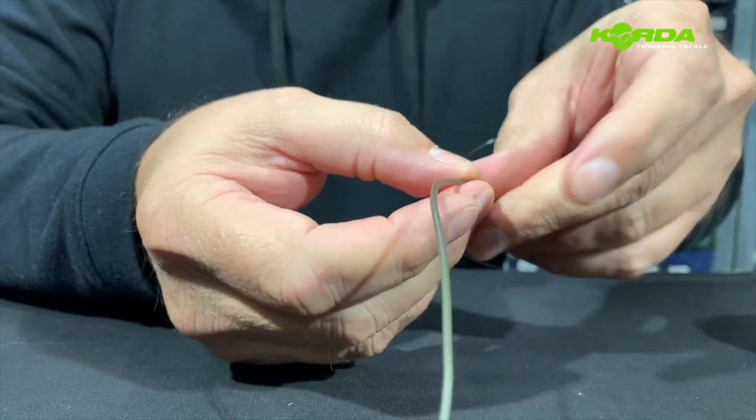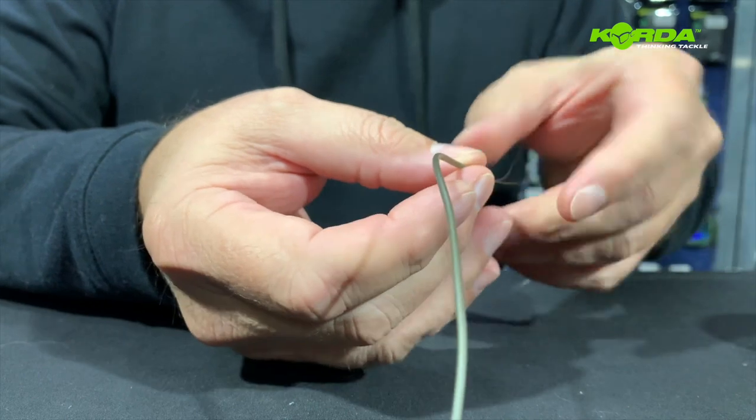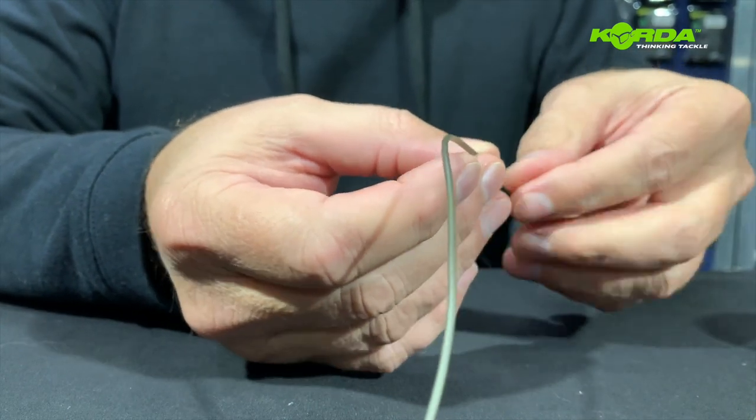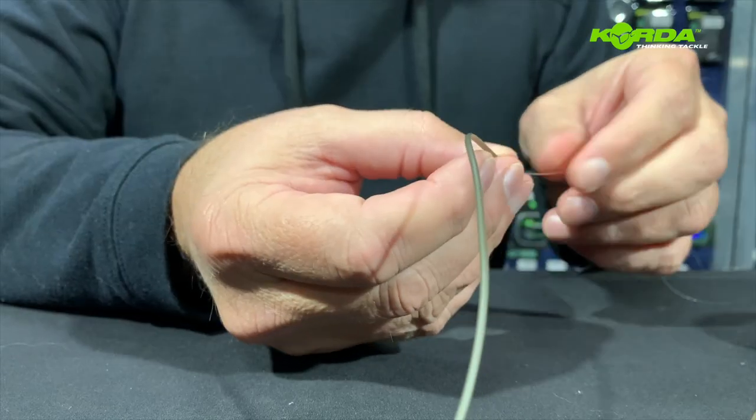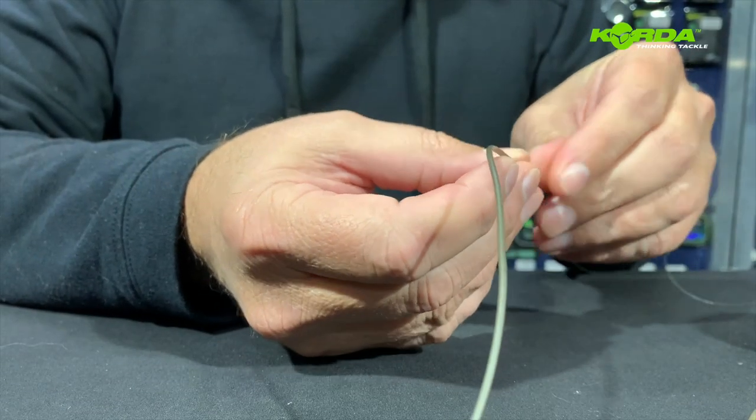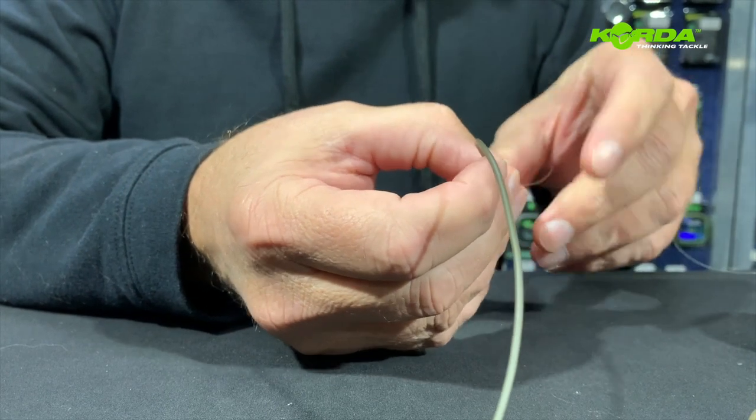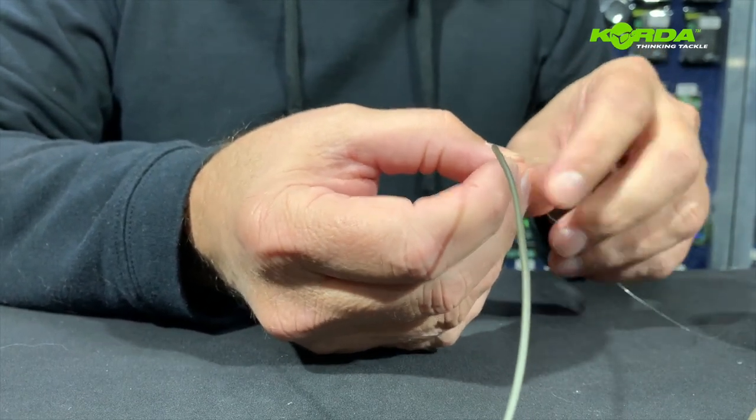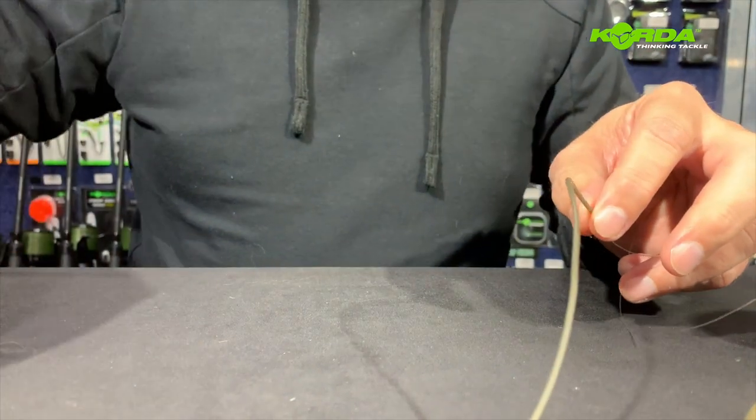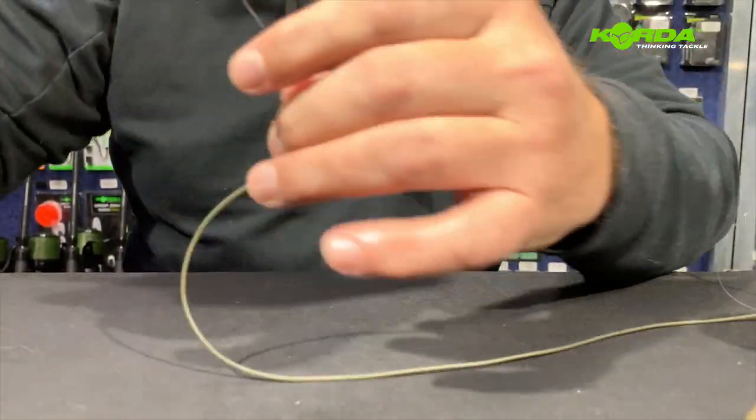I'm just pushing it all the way through. Now tubing you don't normally use with braids, you'll use it with monofilaments or fluorocarbons. And it's there to protect the fish, the flank of the fish mainly, and to make sure that there is no damage to the fish's scales.